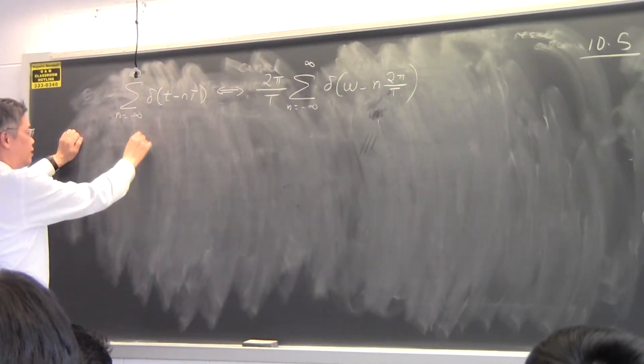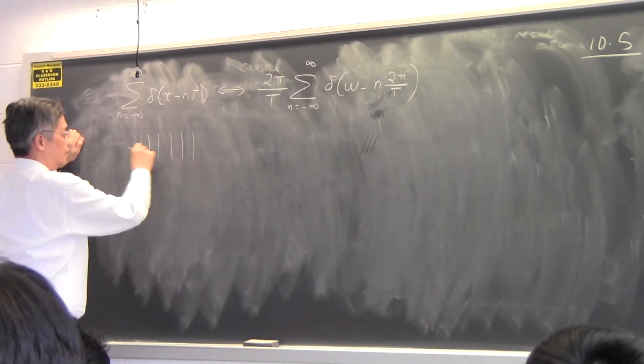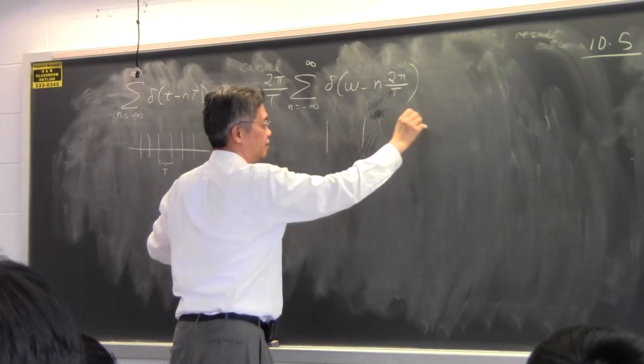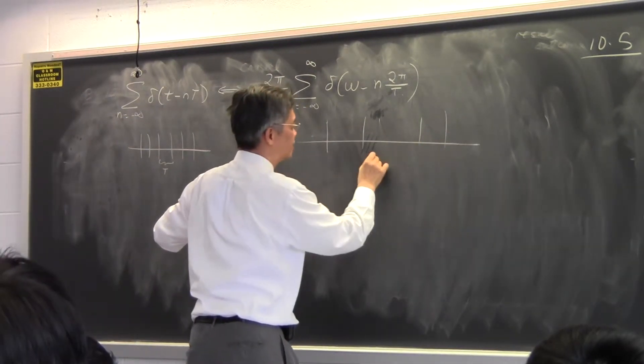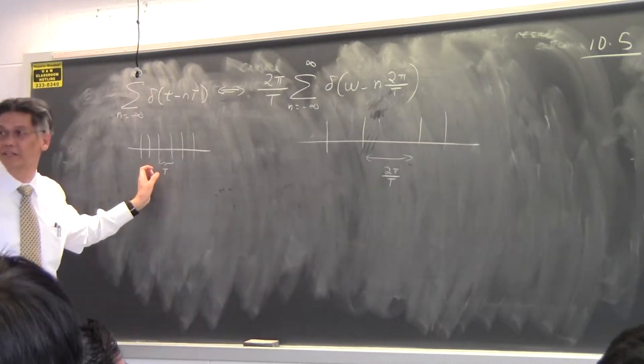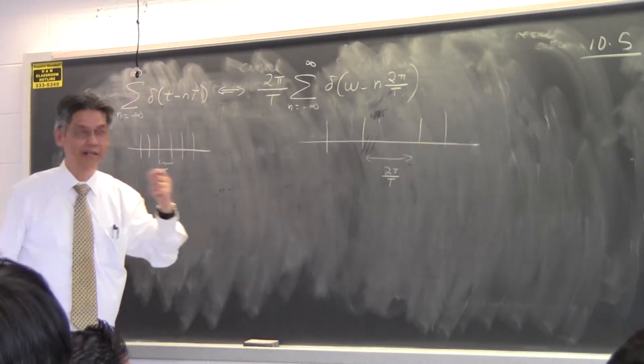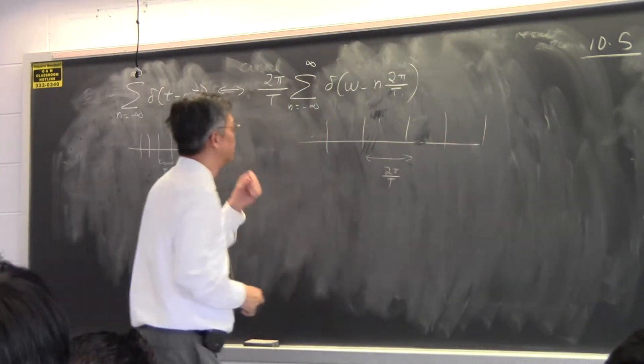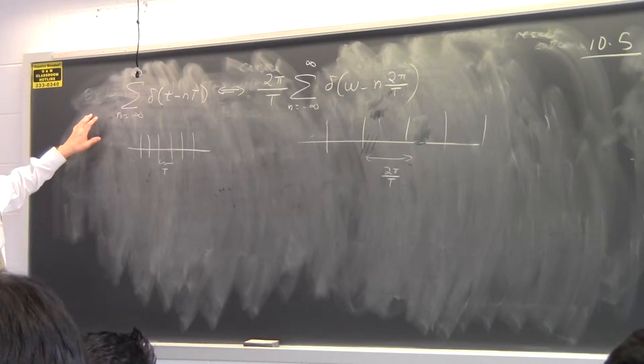Which means that if I have an impulse train in the time domain, in the same spacing in T, then I have an impulse train in the frequency domain, and the spacing is 2 pi over T. The closer the spacing this is, the wider that the spacing is. Okay? So, this is extremely important.